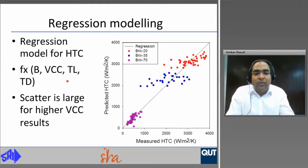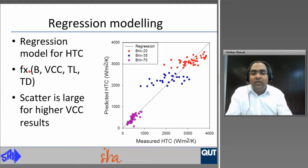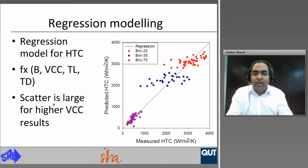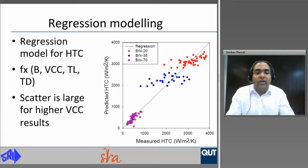The second objective of phase two is to develop a regression model for heat transfer coefficient. This is the first attempt to put together a regression model for heat transfer coefficient with all tube dimensions studied in this work. The equation is a function of brix, vapour condenser coefficient, tube length, and tube diameter. The scatter is large for higher VCC results, and work is still ongoing to improve this regression model.